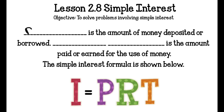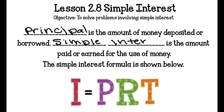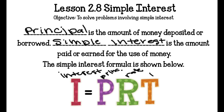Our vocabulary is critical that you understand the meaning here. Our principal is the amount of money deposited or borrowed. Simple Interest is the amount paid or earned for the use of money. The Simple Interest formula is I equals PRT, where I equals the interest, P is the principal, R is rate, and T is time.